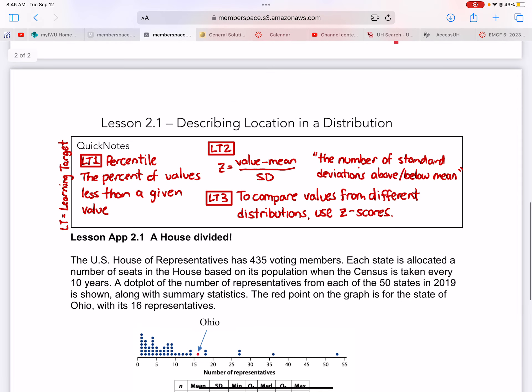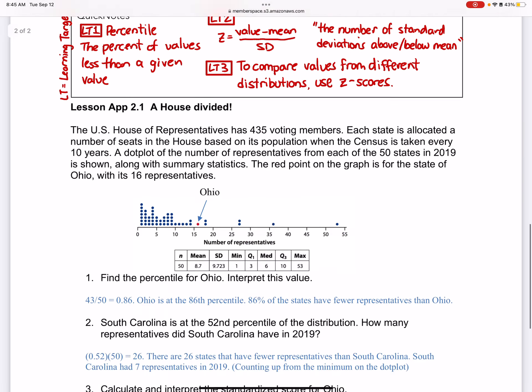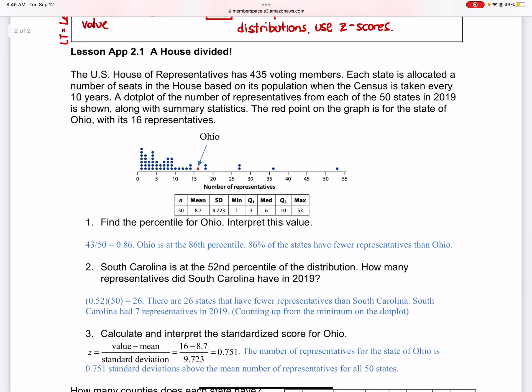I know yesterday when we wrote these notes, it says the percentile of the values is less than a given. Really, it should be less than or equal to because Ohio is the 43rd piece of data. So there's 43 states that are less than or equal to Ohio, and that is the 86th percentile.